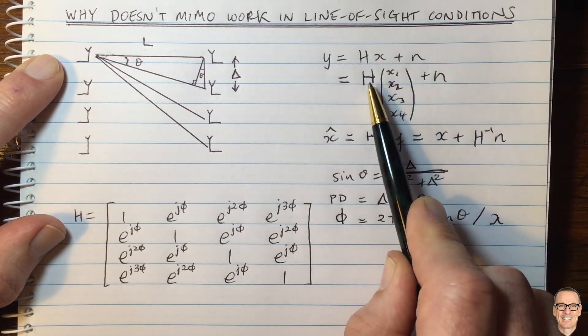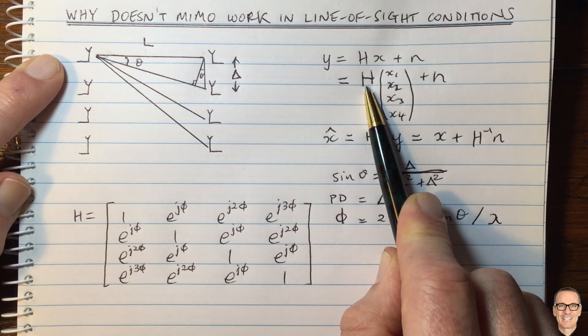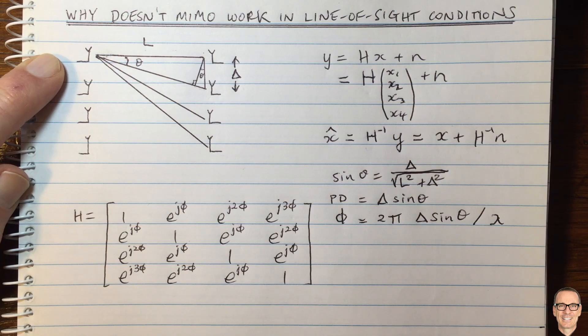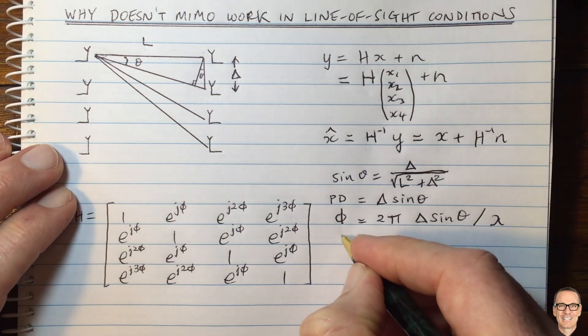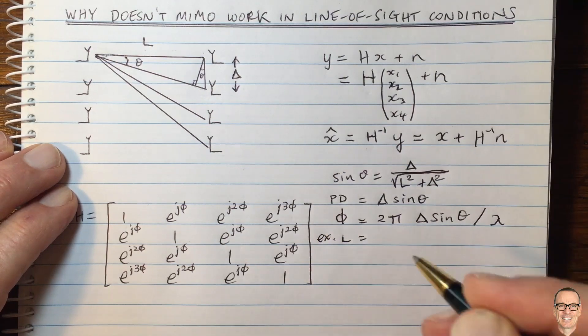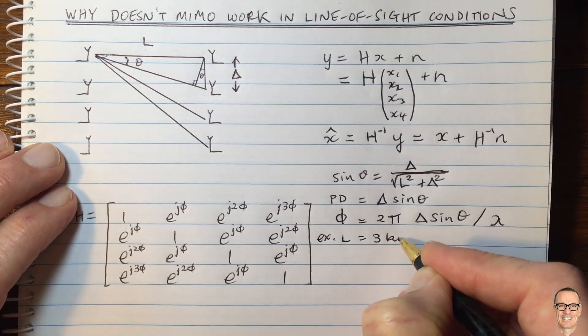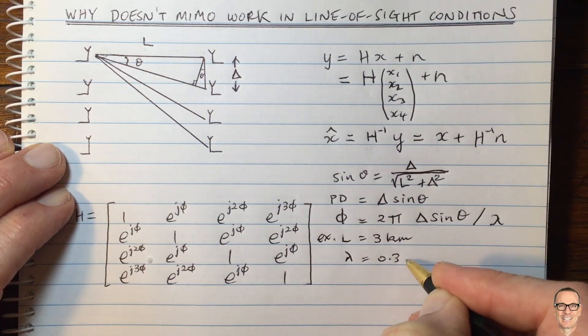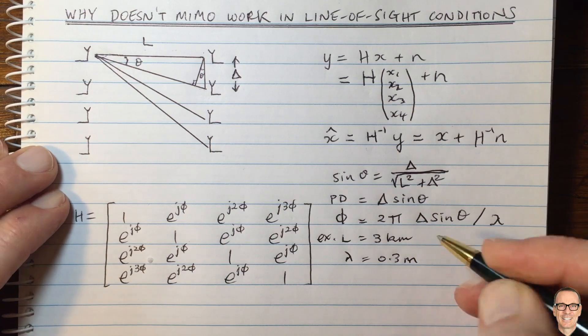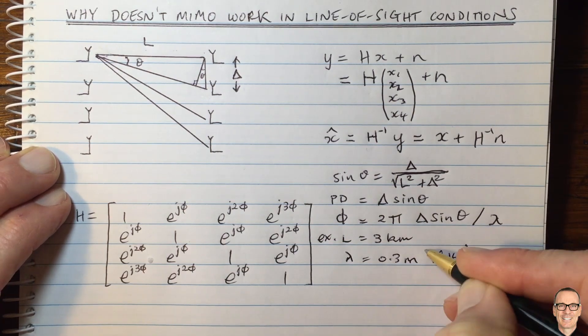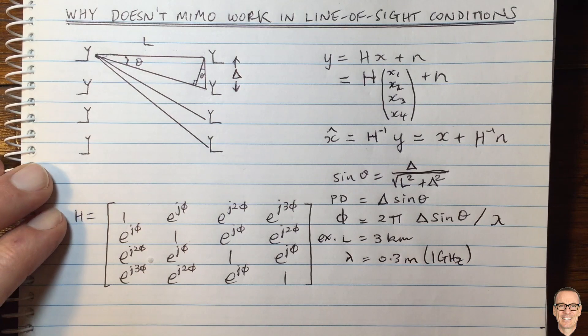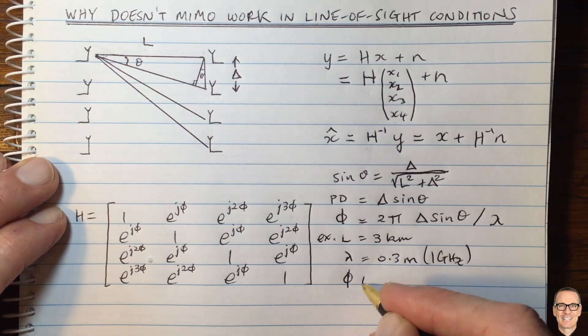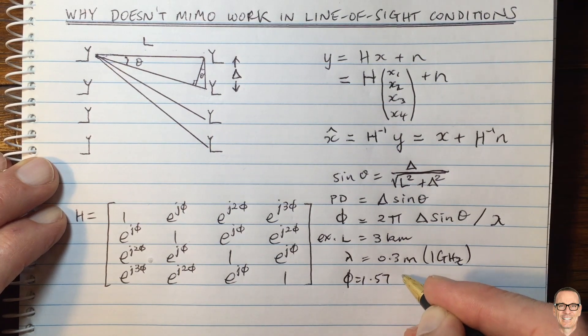The answer is this noise term here. And the fact that you don't know h absolutely exactly. You have to estimate h. If we pick some typical numbers, if we had L equals 3 kilometers, and we had lambda equals 0.3 meters, which corresponds to 1 gigahertz, which is common for mobile communications. Then we would have a value of phi being 1.57 times 10 to the minus 4,